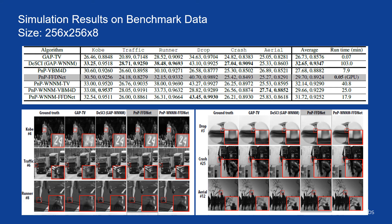Now we show some simulation results on a benchmark dataset. The size is 256×256×8, meaning we compress eight frames into a single measurement. Running different algorithms: GAP-TV is total-variation-based and runs quickly; DeSCI is the previous state of the art and can be recognized as PnP-WNM. DeSCI still achieves the best quality with the highest PSNR. Our PnP-FFDNet finishes within about 10 seconds and the result is comparable — visualized results look very similar.